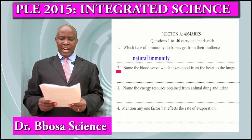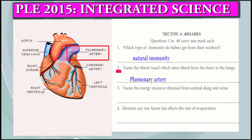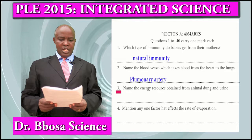Question 2: Name the blood vessel which carries blood from the heart to the lungs. That is the pulmonary artery.